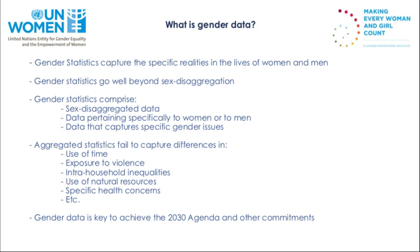Women are often going to multiple places on smaller streets and have more difficulty in the snow because those streets are not being cleared. Based on this gender disaggregated data, they decided to make sure they were clearing the smaller streets so women could make their travels.